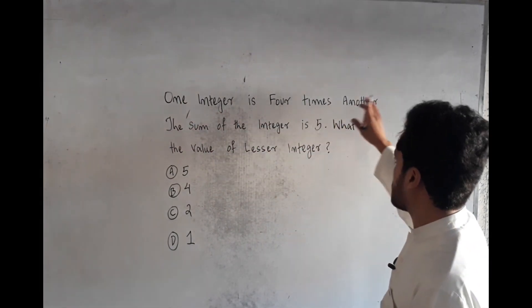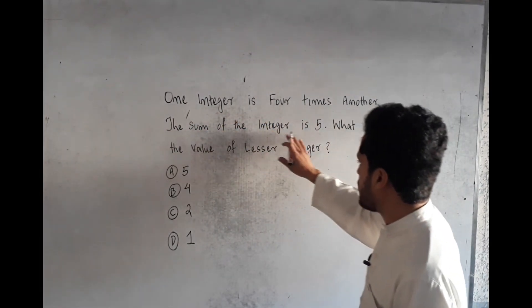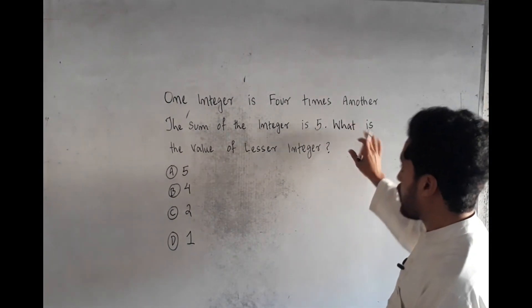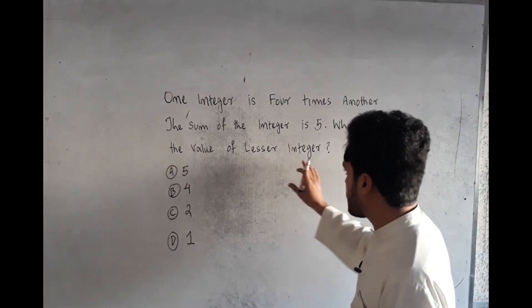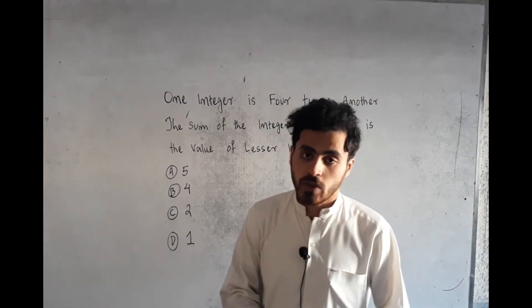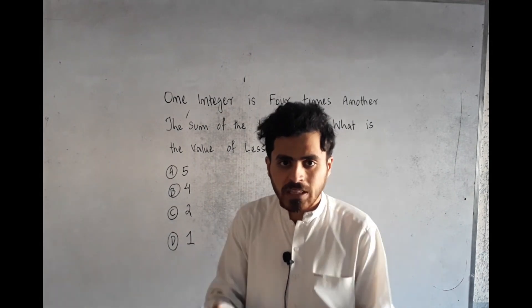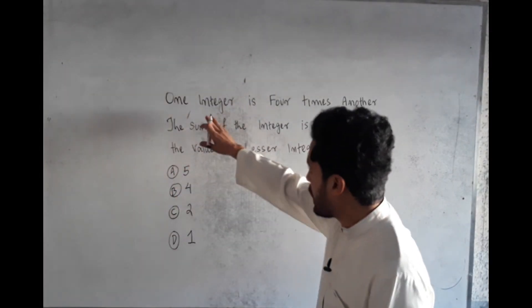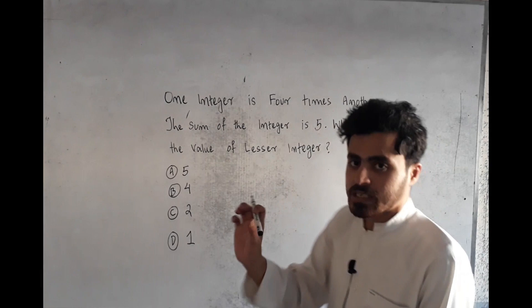One integer is four times another. The sum of the integers is 5. What is the value of the lesser integer? This question is very important for DS mathematics. One integer is four times another, so this means...